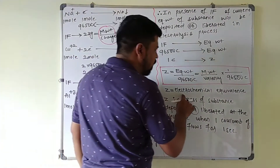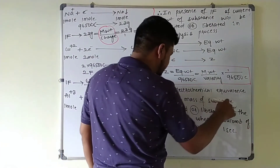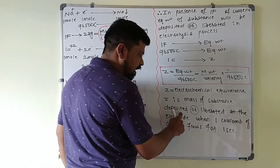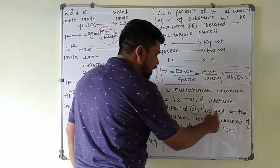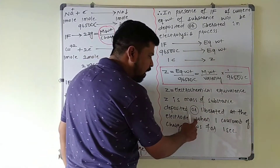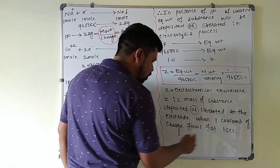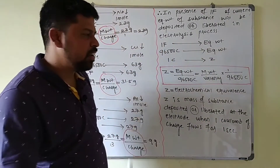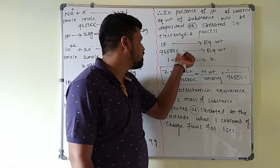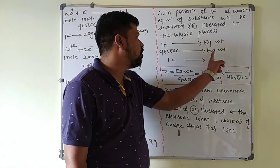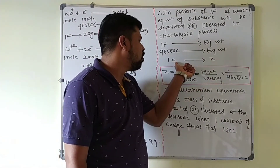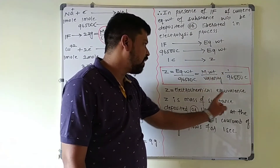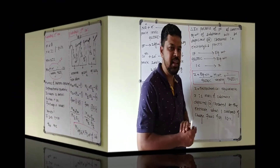Z is the electrochemical equivalence — it is the mass of the substance deposited or liberated at the electrode when one coulomb of charge flows for one second. Always keep in mind: 96,500 coulombs deposits the equivalent weight; one coulomb deposits Z. Z is the electrochemical equivalent.